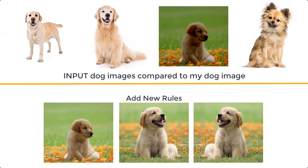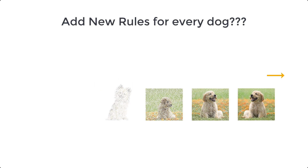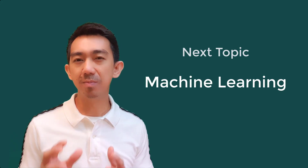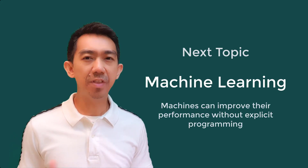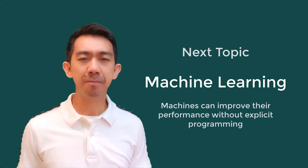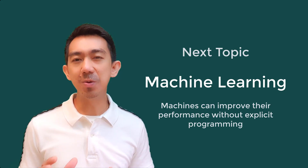Even if I manage to make the program successfully detect my dog in any given image, what happens if I want to improve it to detect not just my dog, but any other dog? How many rules would I need to create for that? That's hard to imagine, and this is just a sample problem that symbolic AI programs have always struggled with. In the next lesson, you're going to learn a different approach by which machines can improve their performance without explicit programming like the if-then statements used in symbolic AI. Thanks for watching and hope to see you in the next lesson.